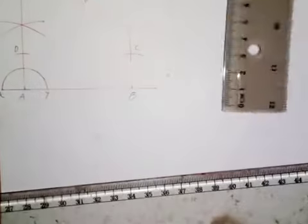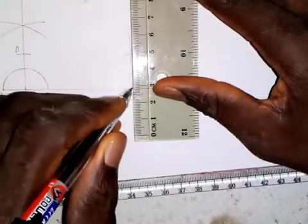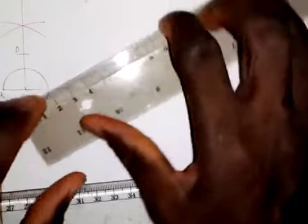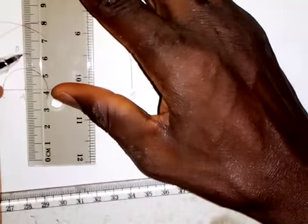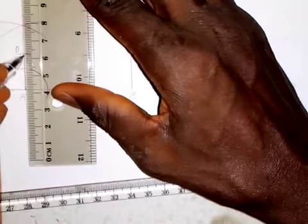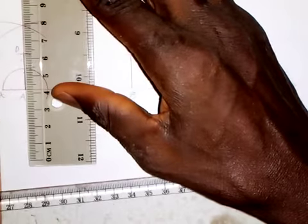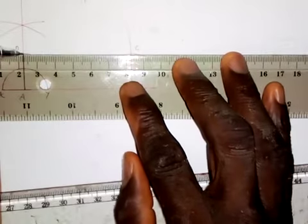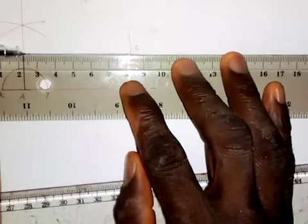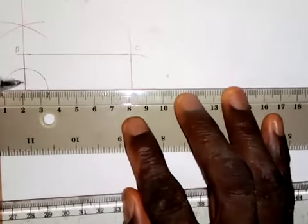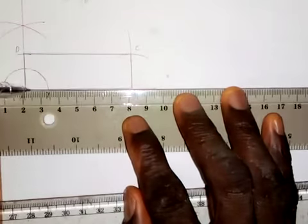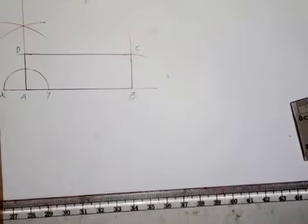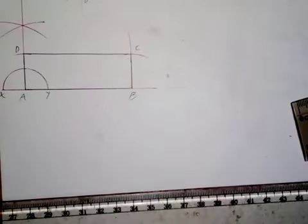Now I join the sides together: I join side BC, then side AD, then CD, and finally AB, making each a solid line. This completes the rectangle. This is how you can construct a rectangle when you are given the length of sides. Thank you for watching, keep on practicing, and God bless you.